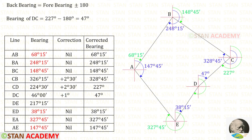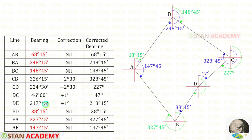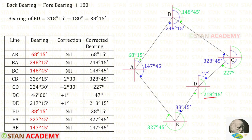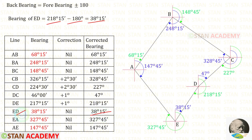Since bearings DC and DE are both taken from station D, the same correction of positive 1 degree applies to DE as well. Adding this gives a corrected bearing for DE of 218 degrees 15 minutes. Using this forebearing, we find the back bearing ED. Since 218 degrees 15 minutes is more than 180, we subtract: this gives 38 degrees 15 minutes. The known bearing of ED is also 38 degrees 15 minutes — since the values match, our corrections are verified as correct.